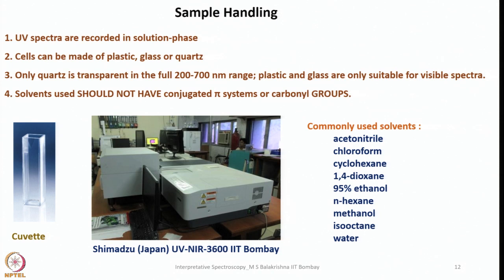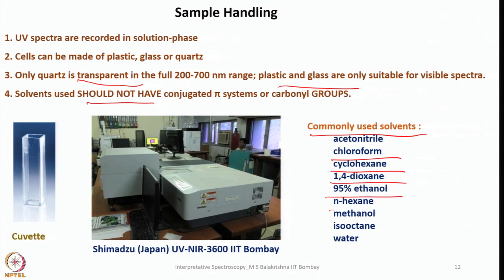Sample handling is very important. UV spectra are recorded in solution phase; cells can be made of plastic, glass, or quartz — but preferably quartz should be used because only quartz is transparent in the full 200 to 700 nanometer range, while plastic and glass are only suitable for visible spectra. Solvents should not have a conjugated pi system, carbonyl groups, or any groups with lone pairs of electrons. Commonly used solvents include acetonitrile, chloroform, cyclohexane, 1,4-dioxane, 95% ethanol, n-hexane, methanol, isooctane, and water — chosen depending on the solubility of the sample.